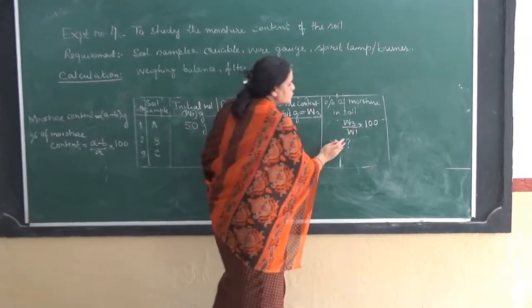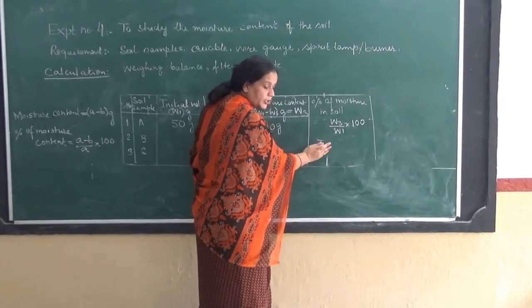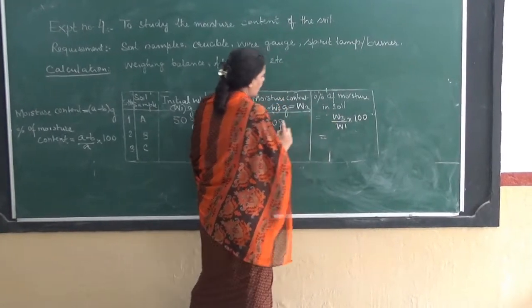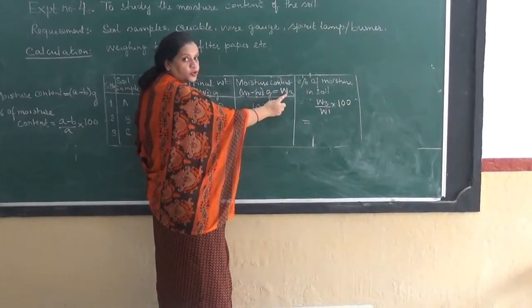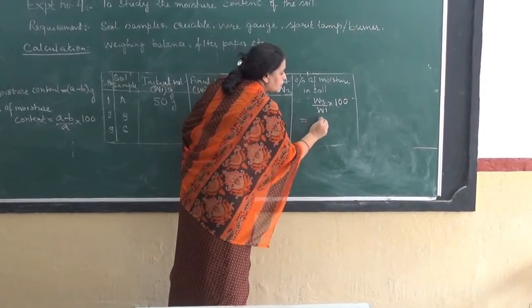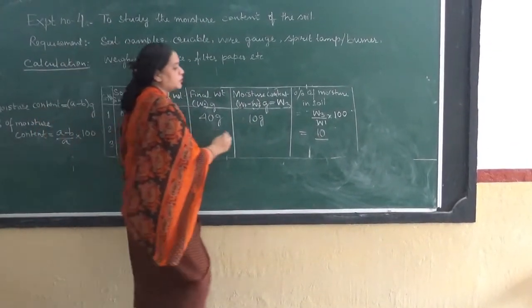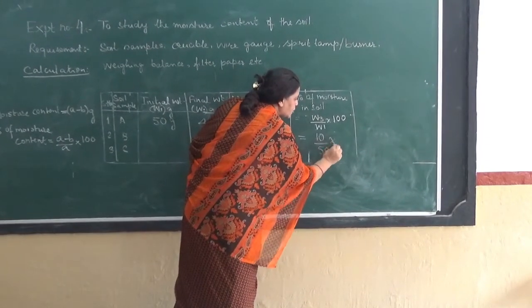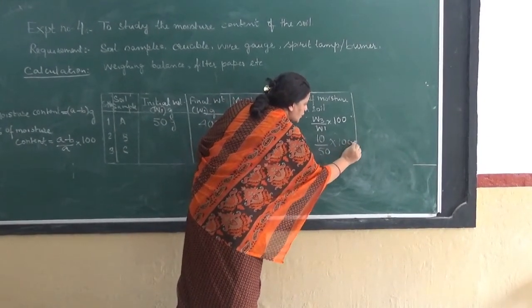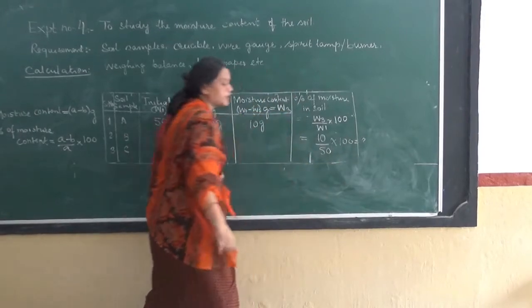So you can find the moisture content of sample A. I am doing it for you people over here. And I had denoted this 10 grams with W3. Simply divide W3 by W1, which was 50, multiplied by 100. It will give you the moisture content of the soil. Calculate that.